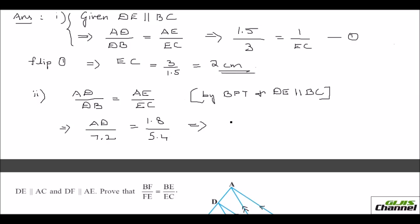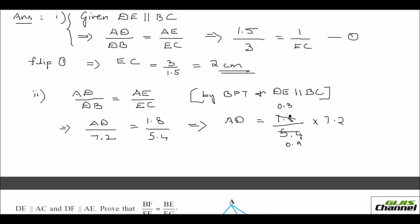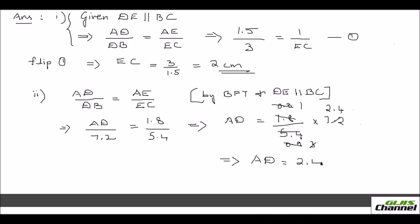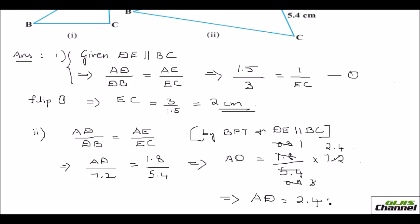This gives us AD equals 1.8 over 5.4 times 7.2. Simplifying 1.8 over 5.4 gives 0.3, or equivalently 1 over 3. So AD equals 7.2 divided by 3, which equals 2.4 centimeters.